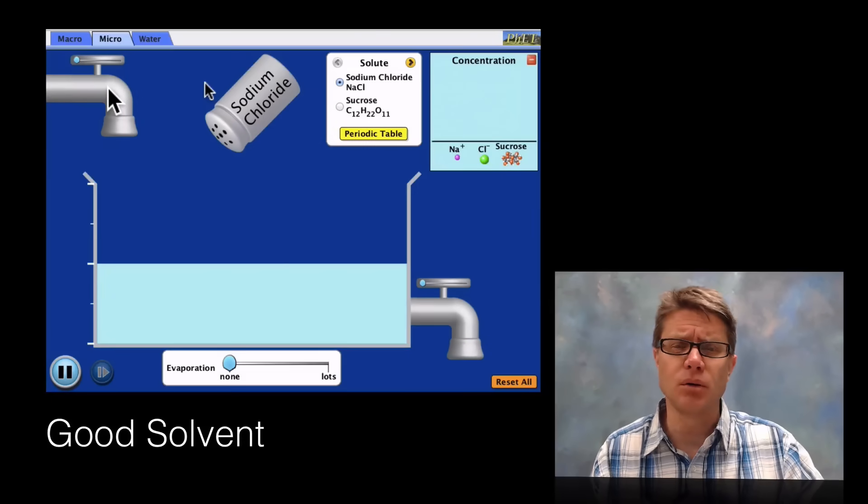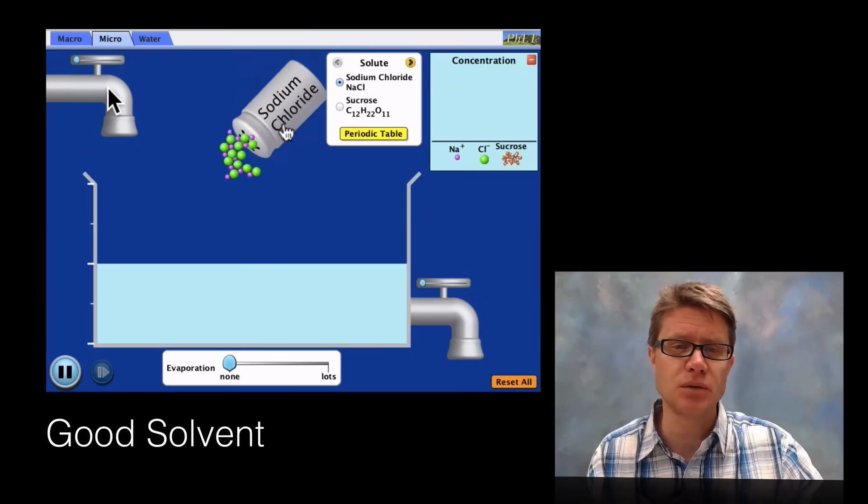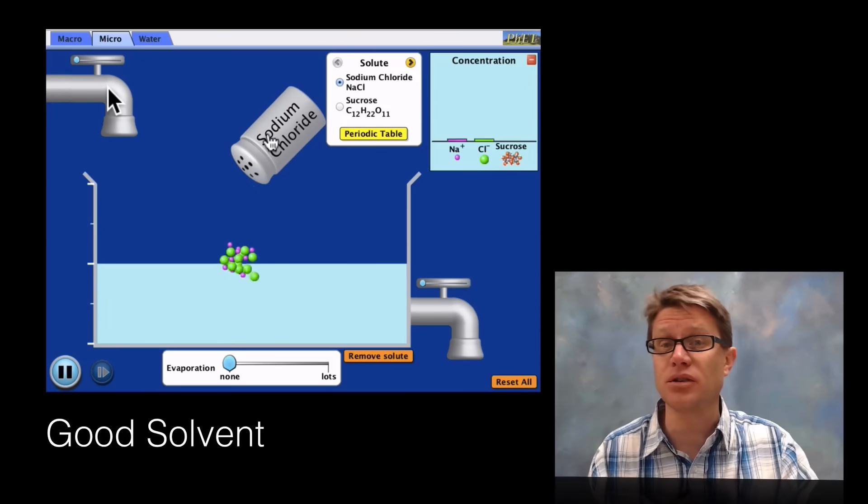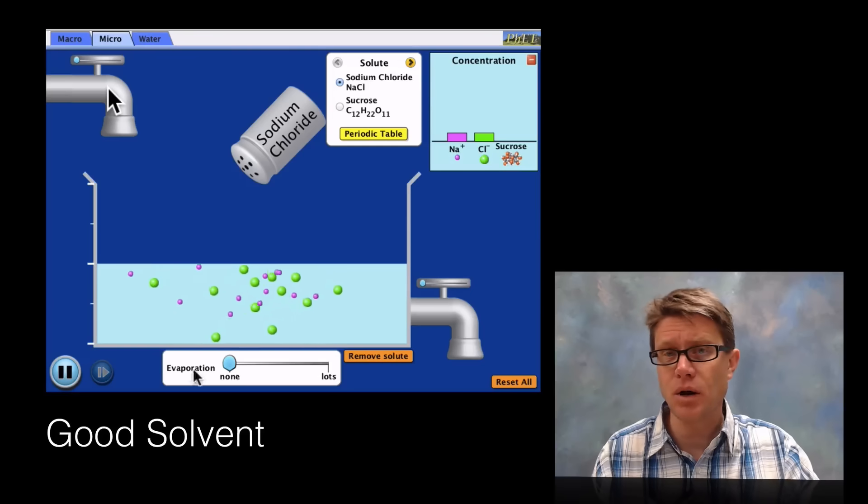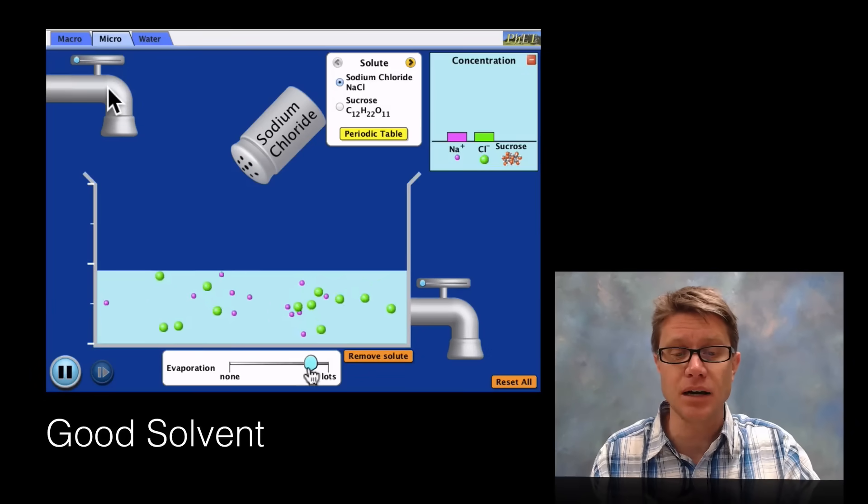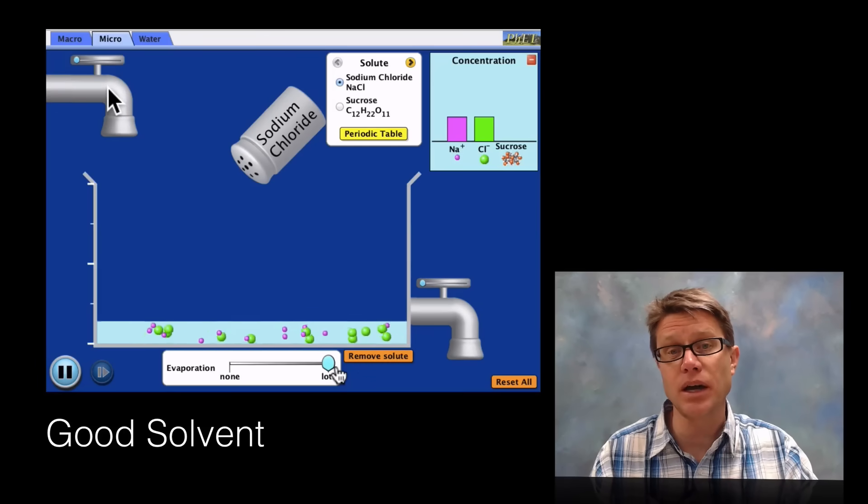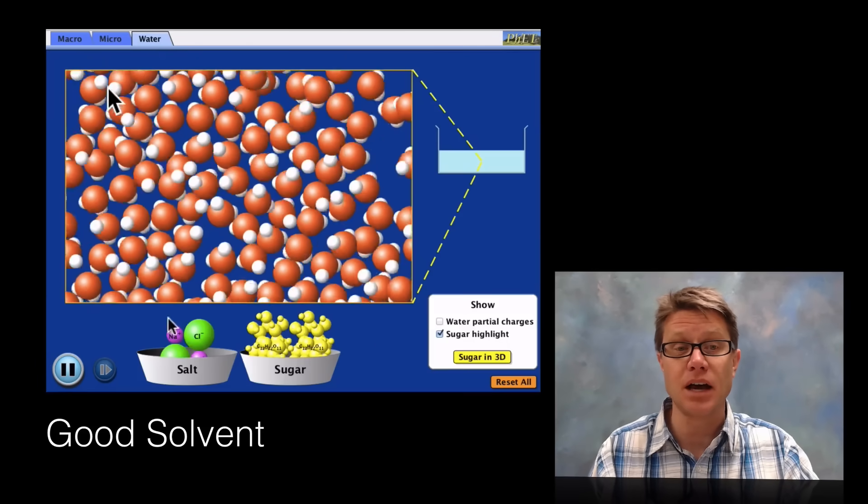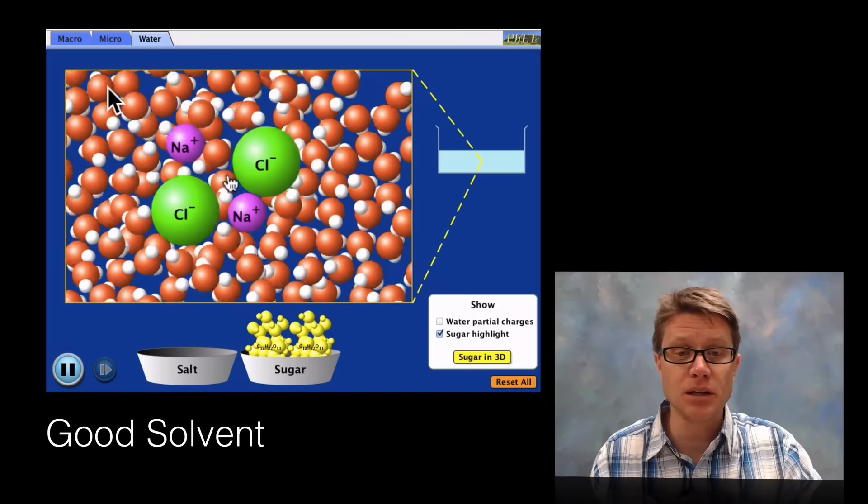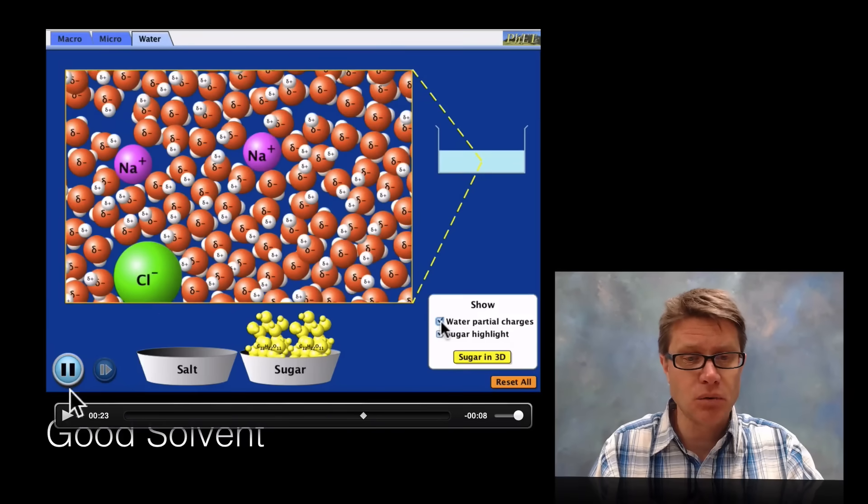Another important thing about water being polar is that it's a good solvent. This is a PhET simulation. What I'm doing is adding a little bit of sodium chloride or salt to water. You'll notice what happens: when we add that to water it breaks apart into its ions. The sodium and chloride ions are actually being ushered away by the water molecules. If we get rid of the water it goes right back to that ionic salt. So if we zoom in a little bit closer what's going on.